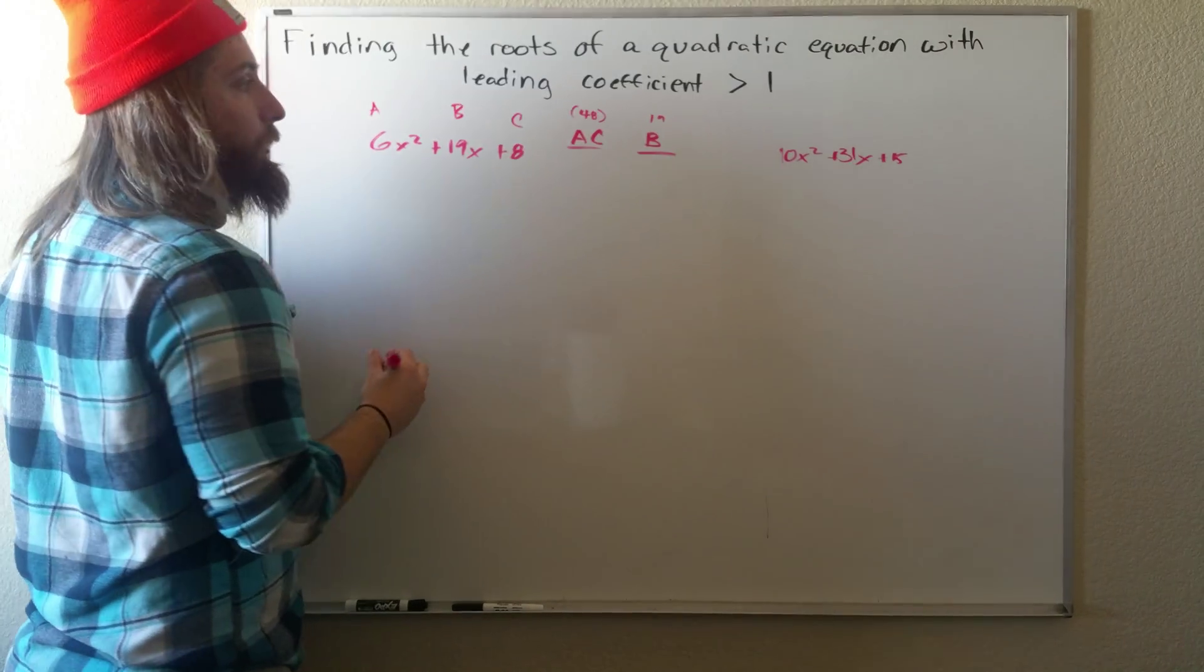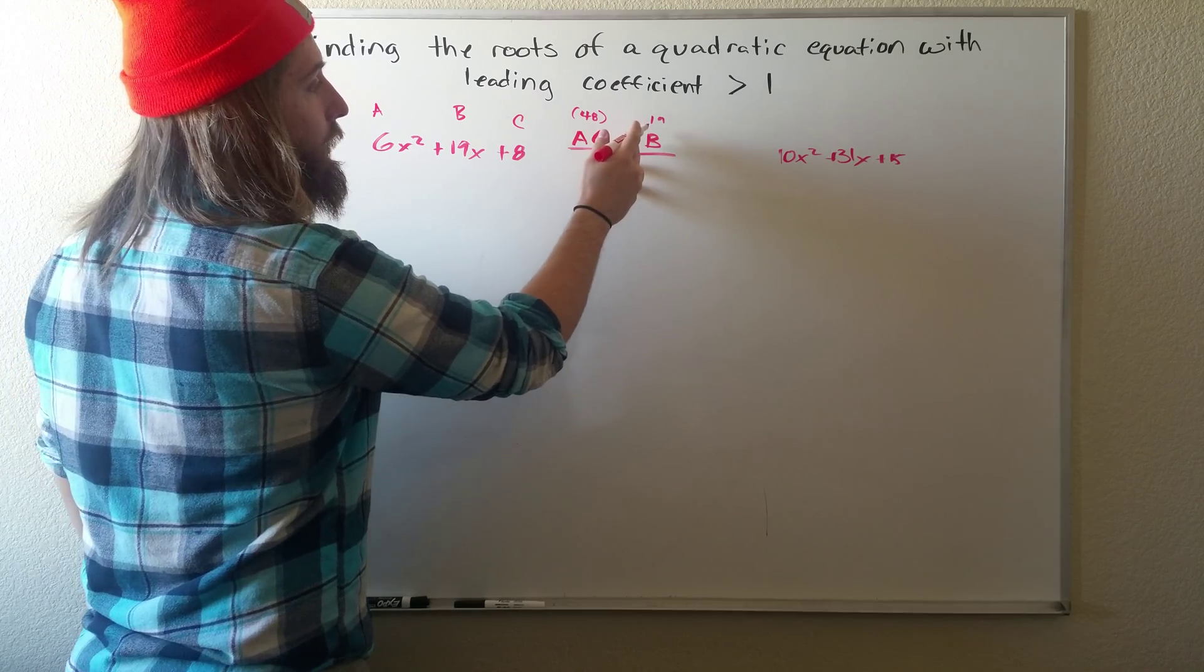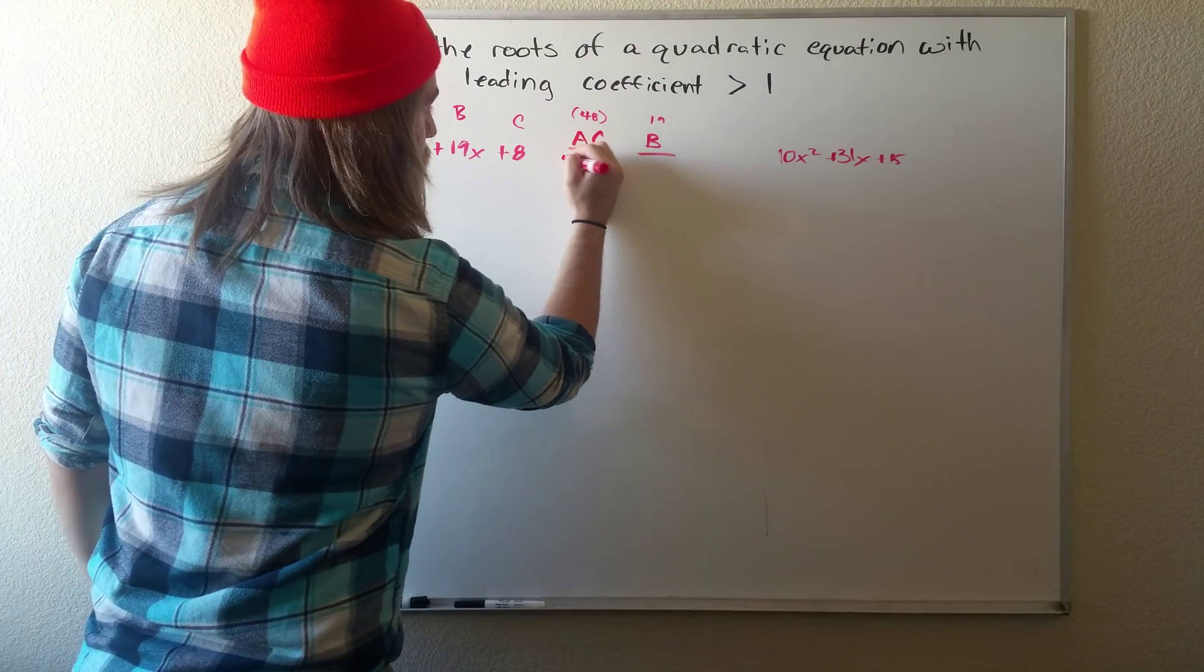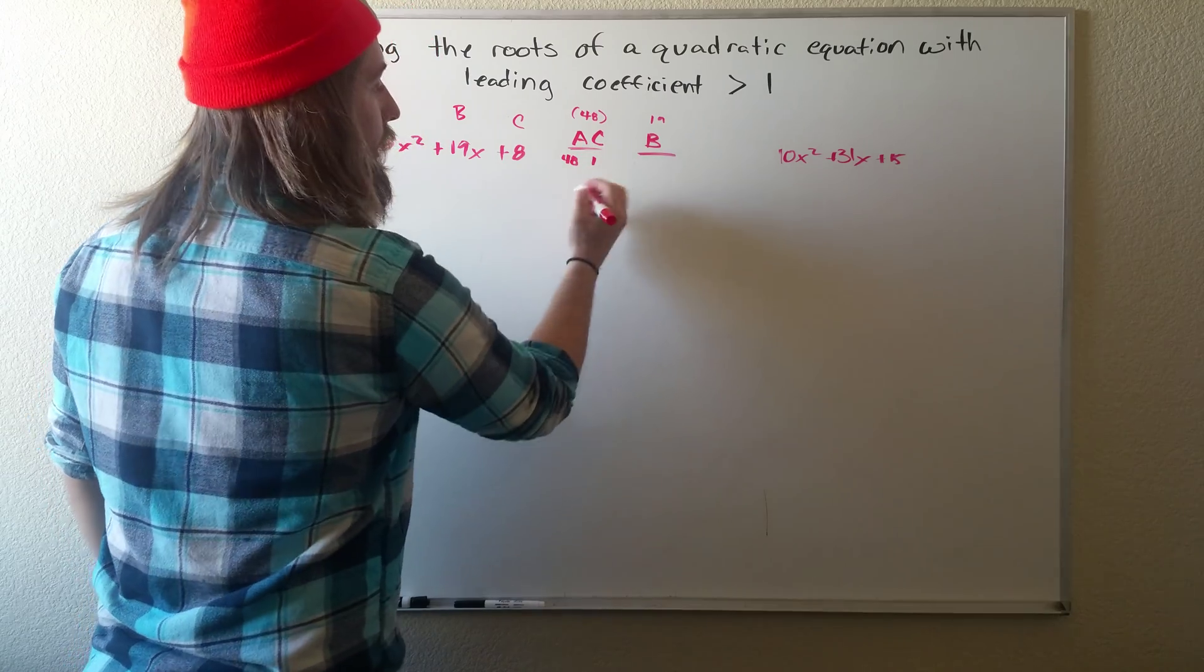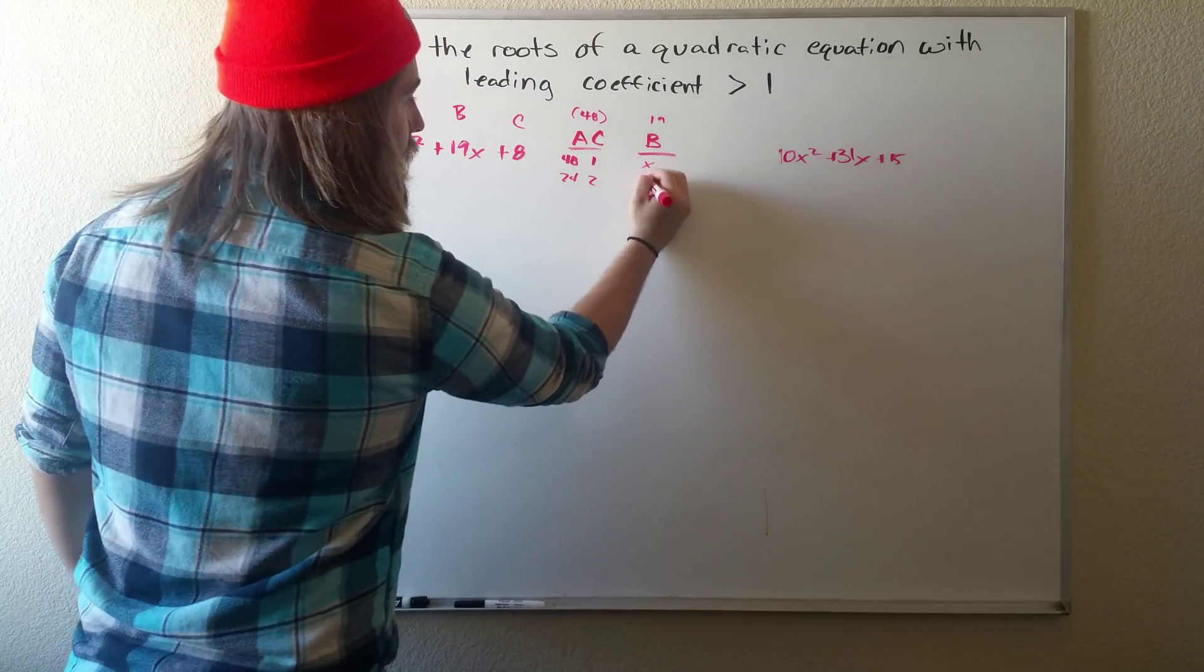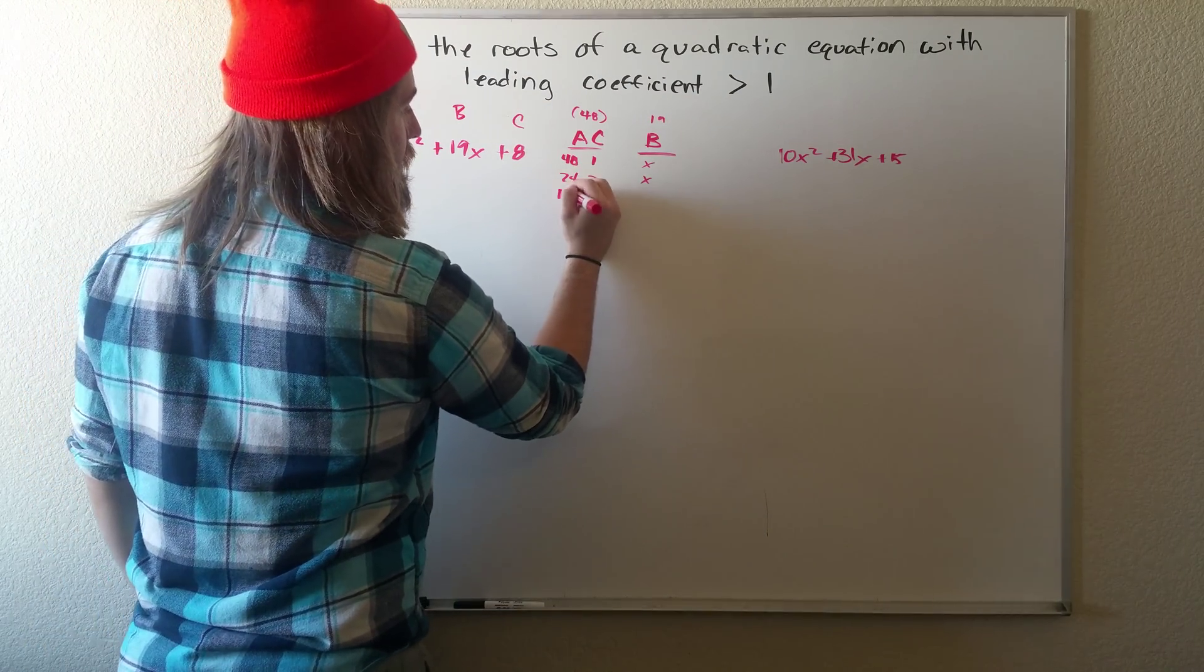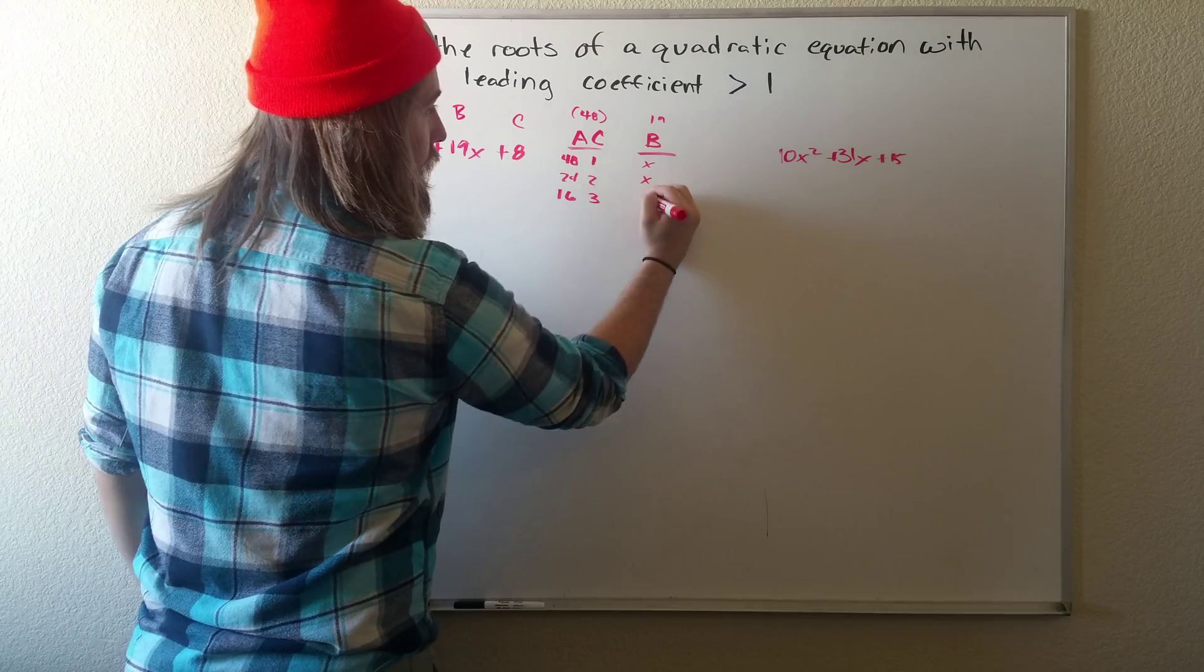Alright, so what we want to do is find two numbers that multiply to give us 48, but add up to give us 19. So if we just go down the factors of 48: 48 and 1, that one doesn't work. 24 and 2, that one doesn't work. We have 16 and 3, and that one does work.